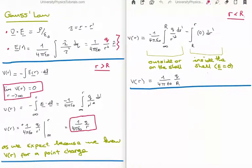Now we need to calculate it inside the shell at a radius small r less than capital R. In order to do this, we need to do two integrals and sum them, or add them. So we need to first of all calculate the electric potential outside the shell, and we need to calculate the electric potential inside the shell. So it's outside or on the shell, and then inside the shell.